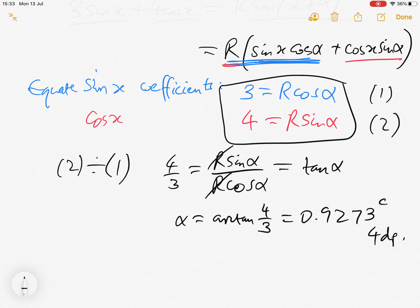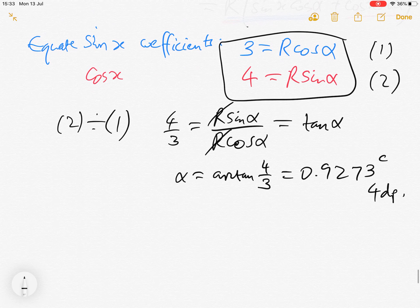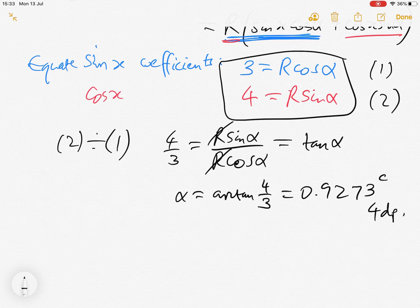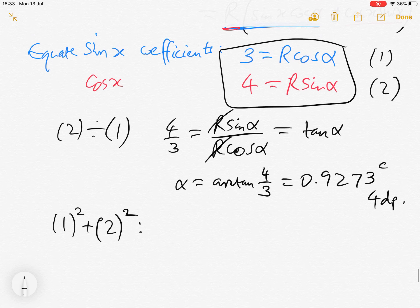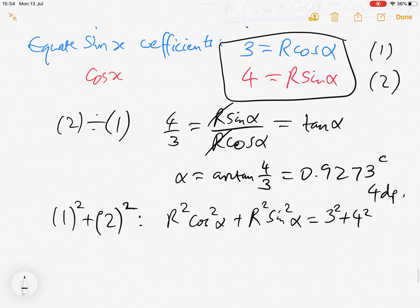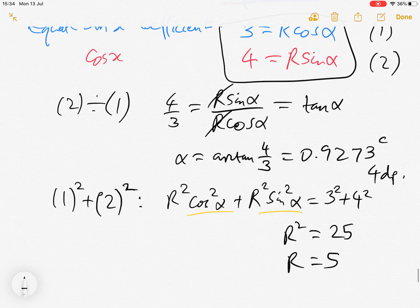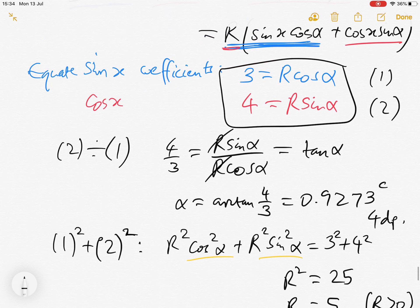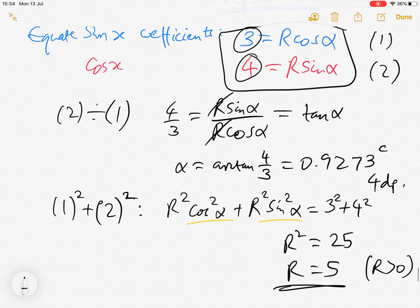And we'll get 0.9273 radians to 4 decimal places. And then to find r, you could put back into one of the equations. But actually a way that's often easier is let's do 1 squared plus 2 squared. And then we're going to get r squared cos squared alpha plus r squared sin squared alpha is 3 squared plus 4 squared. But then remember that sin squared plus cos squared is 1. So we just get r squared is 3 squared plus 4 squared, which is 25. So r is 5. We need r to be positive. So you can just square this number here and add it to this number squared and then take the square root. That always works to find r.